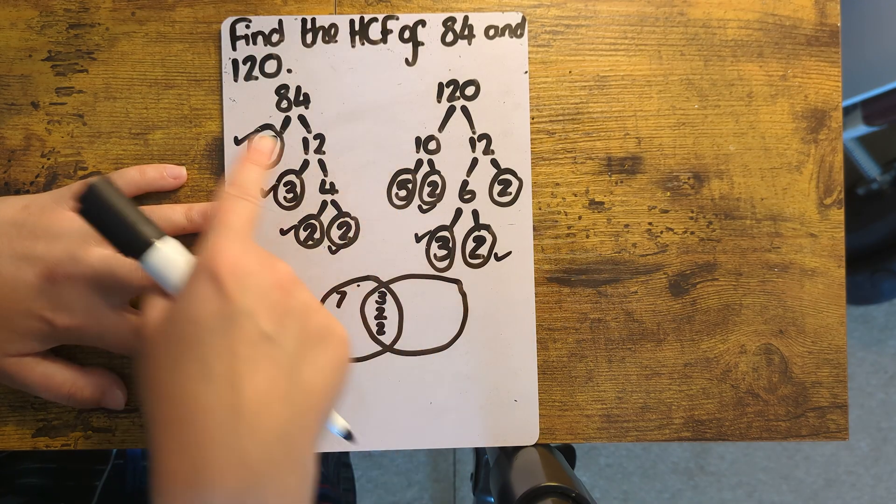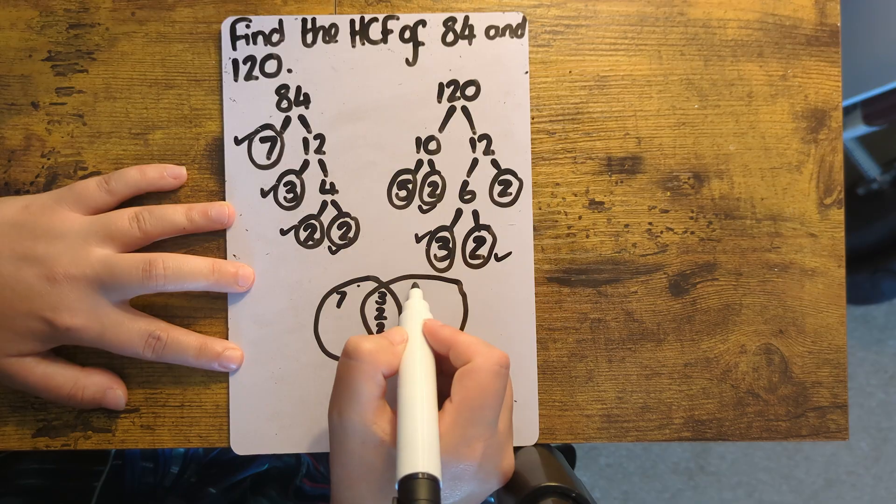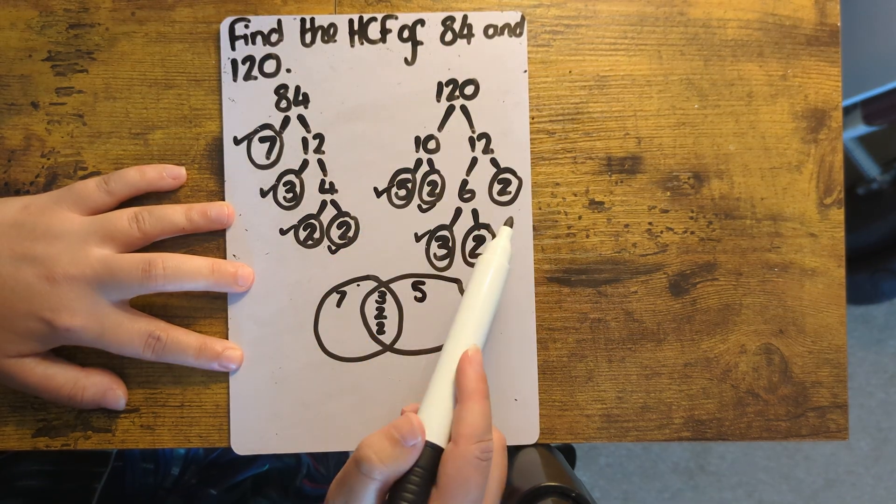So this 5 can't be paired up with another 5 on the 84 tree, so that goes on the right-hand side, and so does this 2.